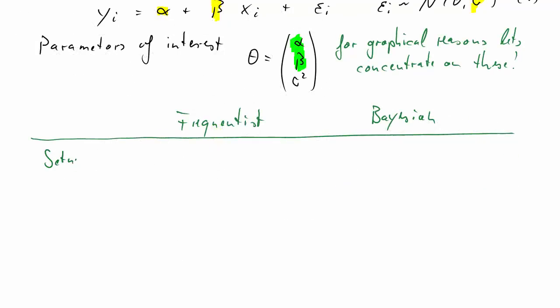Now, we'll juxtapose what frequentists and what Bayesians would do. First, the setup, and that's very important. A frequentist would basically say, I'm interested in that theta, and theta is unknown but it is fixed. There's one true value for the alpha, beta, and sigma squared.